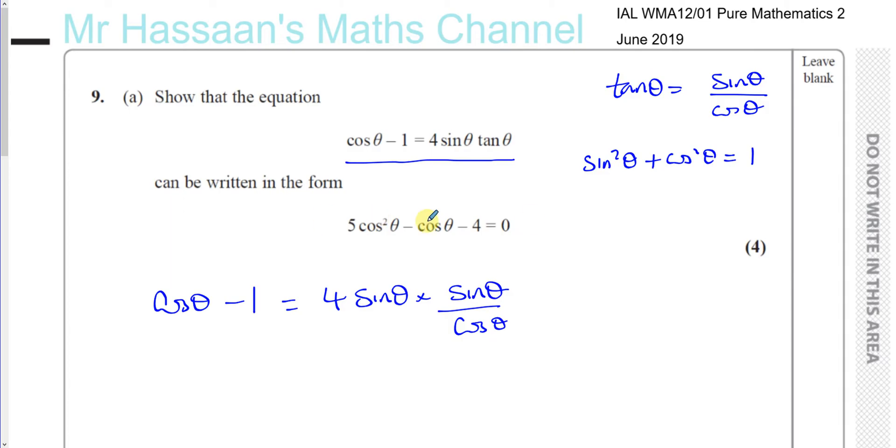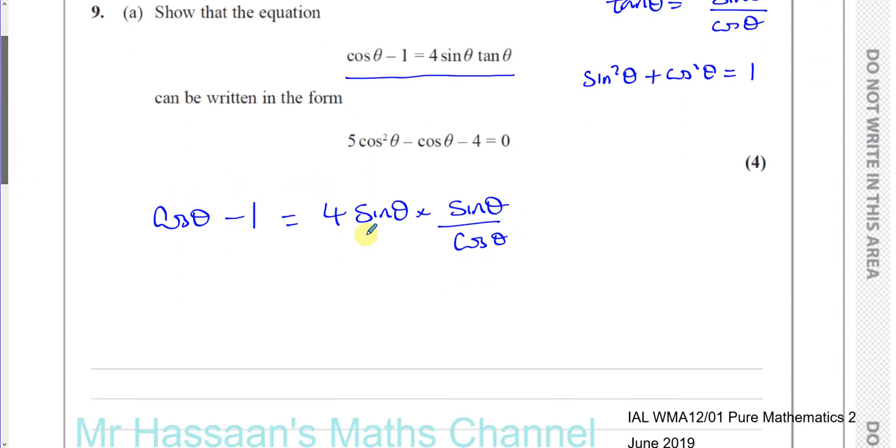Now over here we see there's no fraction, so let's multiply both sides of this equation by cosine theta, in which case you're going to get on this side, cosine squared theta minus cosine theta equals, and here you're going to have, because the cosine theta will cancel out, 4 times sine squared theta.